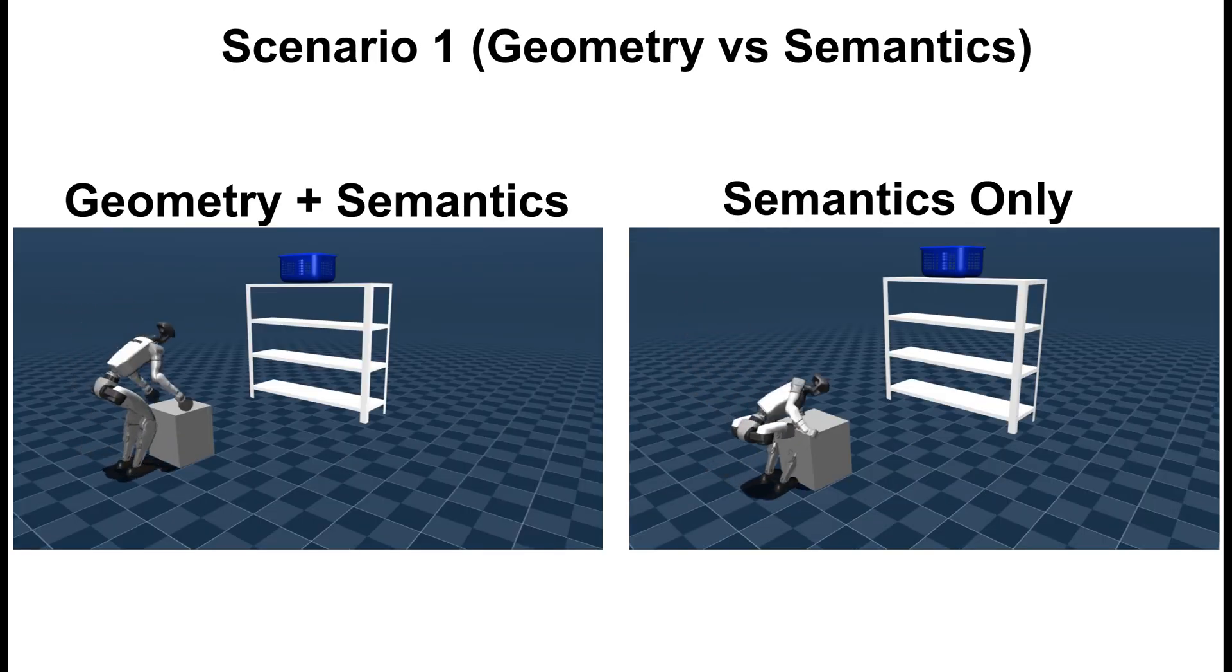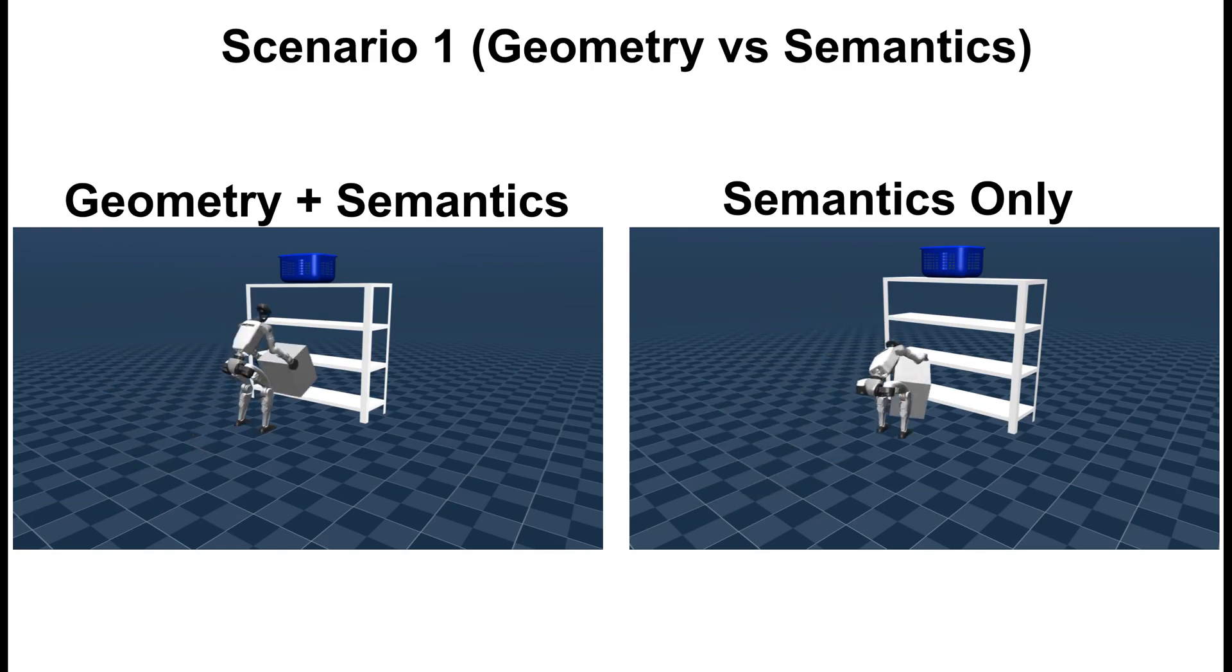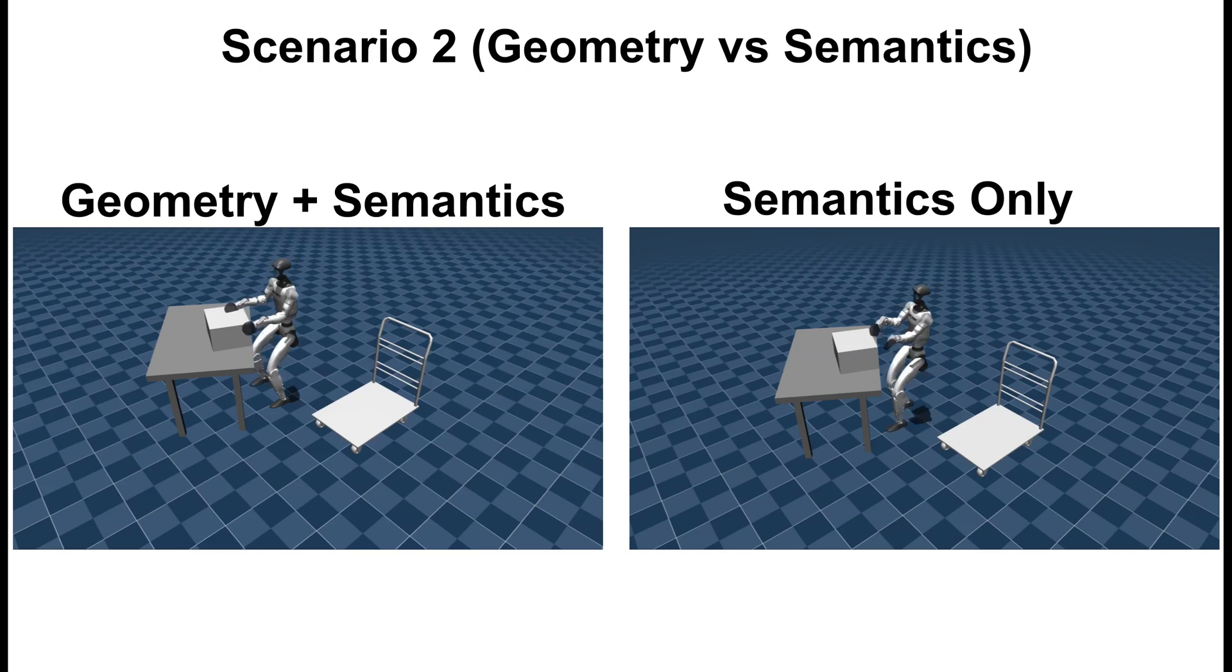Next, we show how our proposed geometry-aware contact transfer improves the contact extraction compared to semantics only, leading to a lower amount of collisions when disabling the collision penalties and using the same robot configurations.